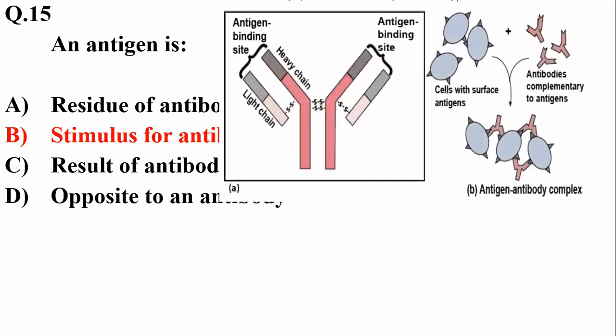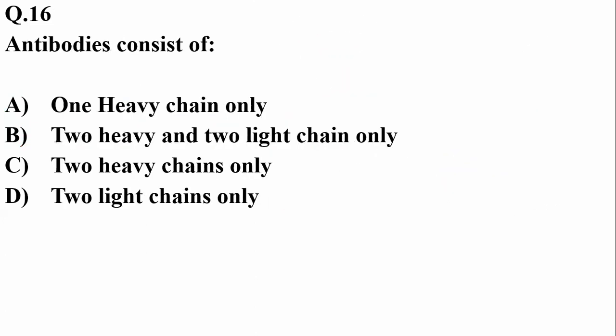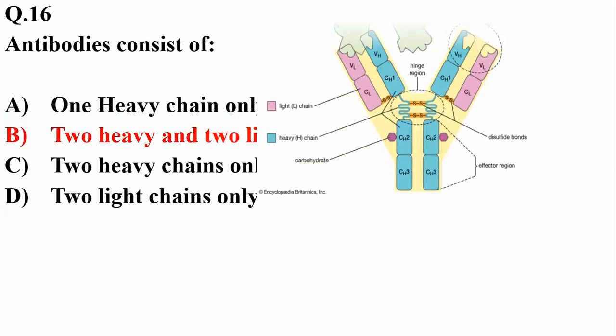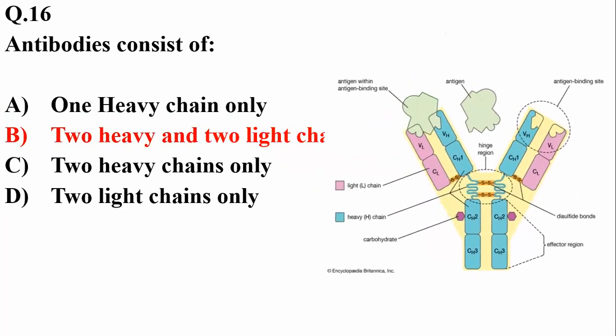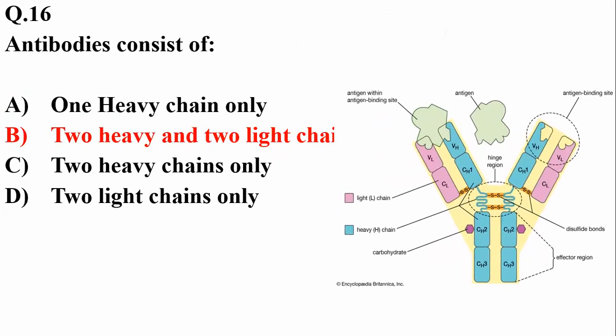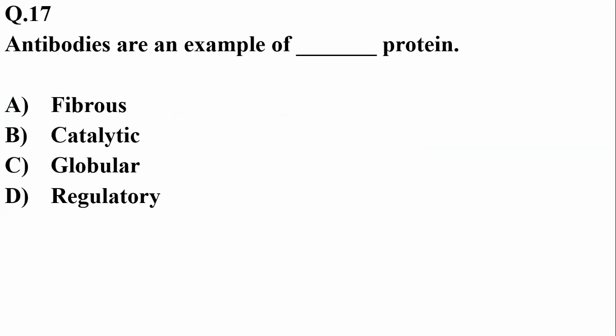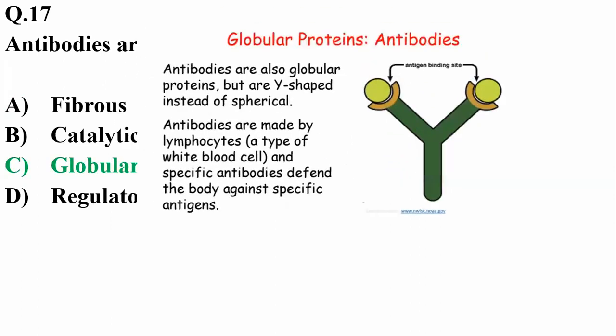An antigen is a stimulus for antibody formation and may be of protein or non-protein nature; it may be a living or non-living component. Antibodies consist of two heavy and two light chains. Heavy chains are longer containing more amino acids, while light chains are shorter with fewer amino acids. Antibodies are an example of globular proteins called immunoglobulins.